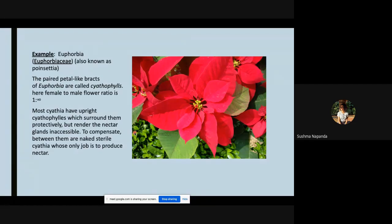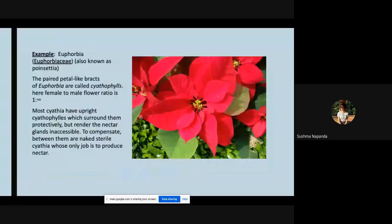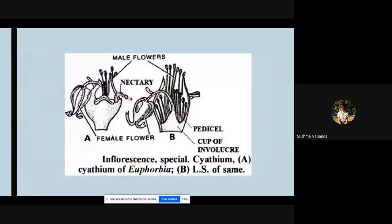To compensate, between them are the naked sterile cyathia whose only job is to produce nectar. So there is a nectar gland in this which produces nectar in order to attract insects for pollination. This is the nectar gland here.